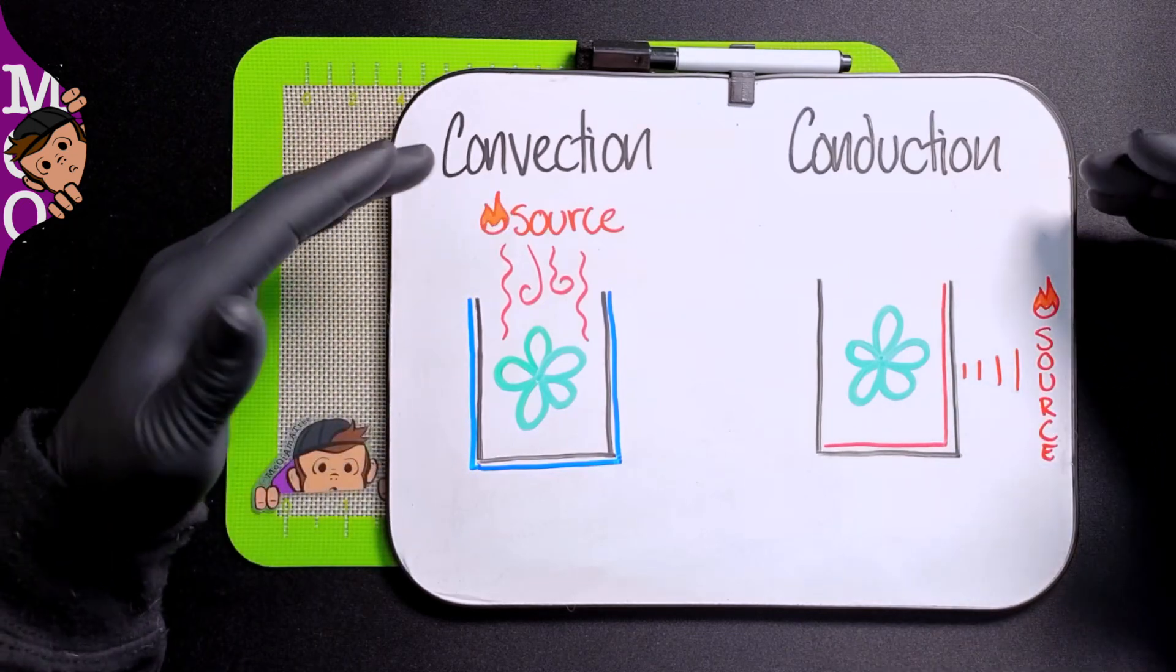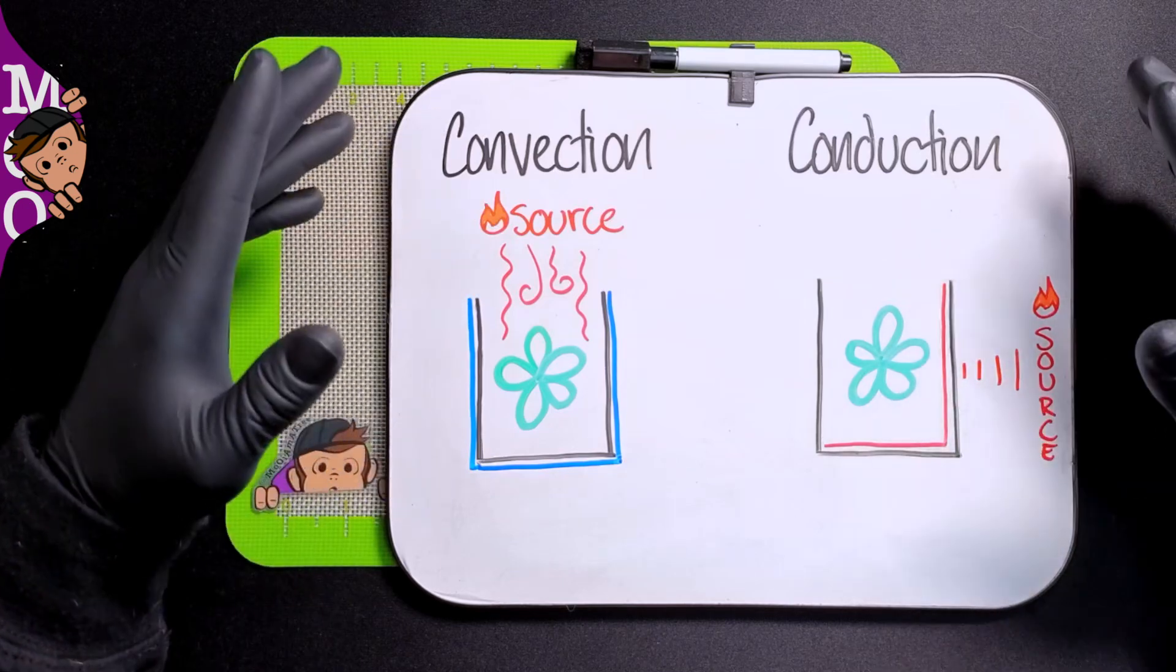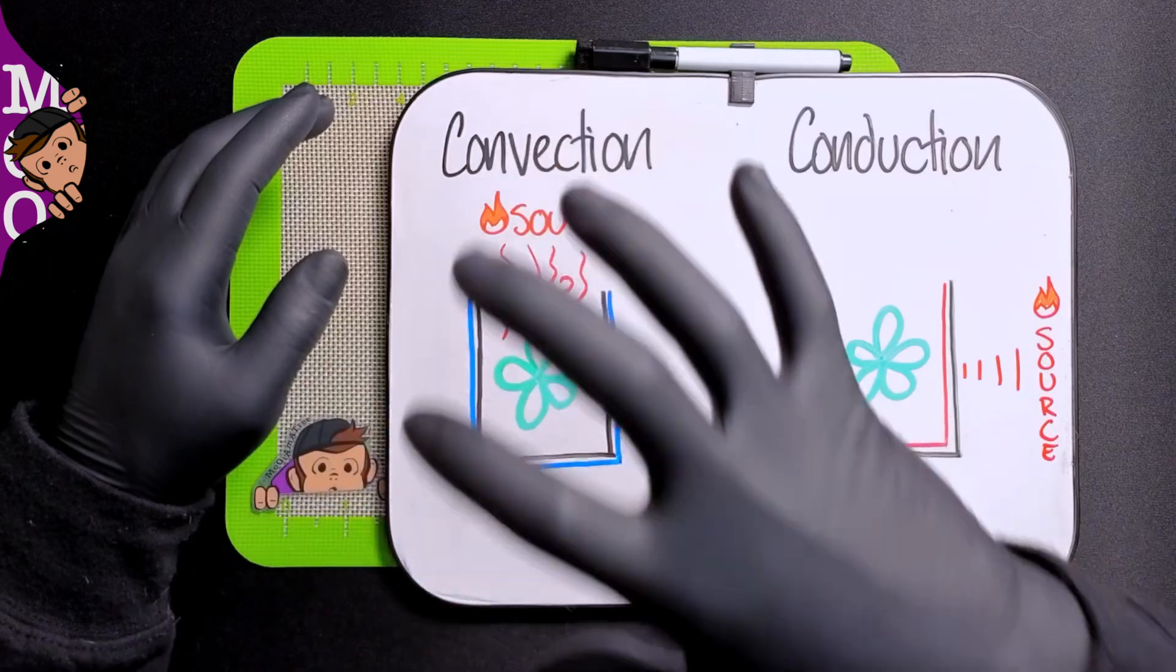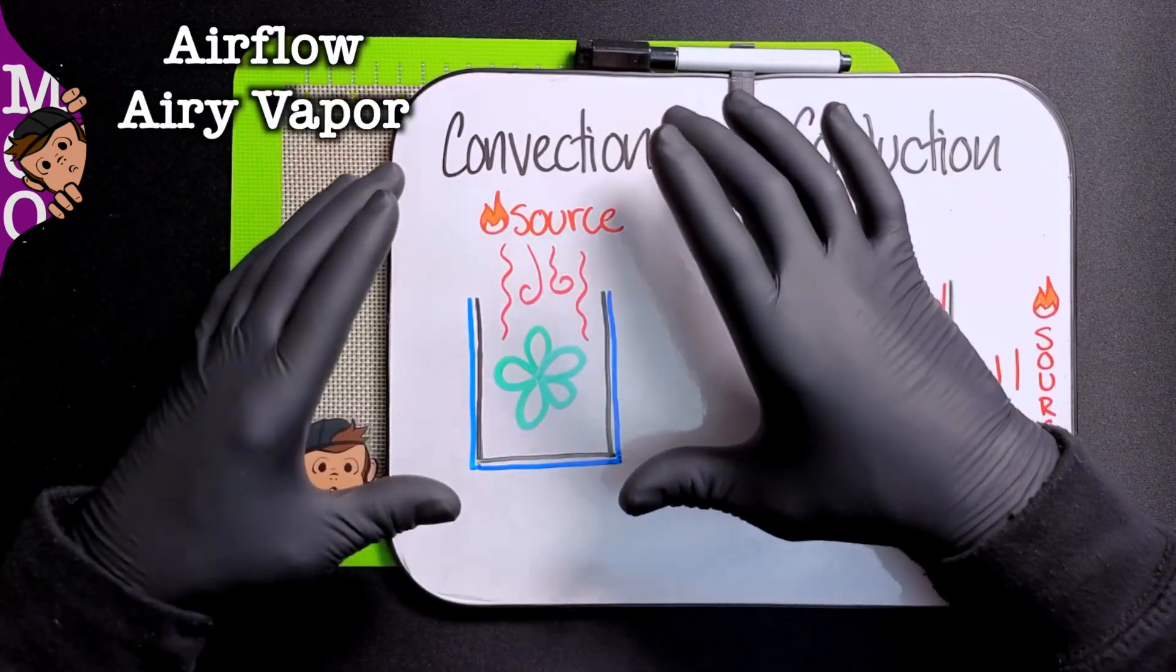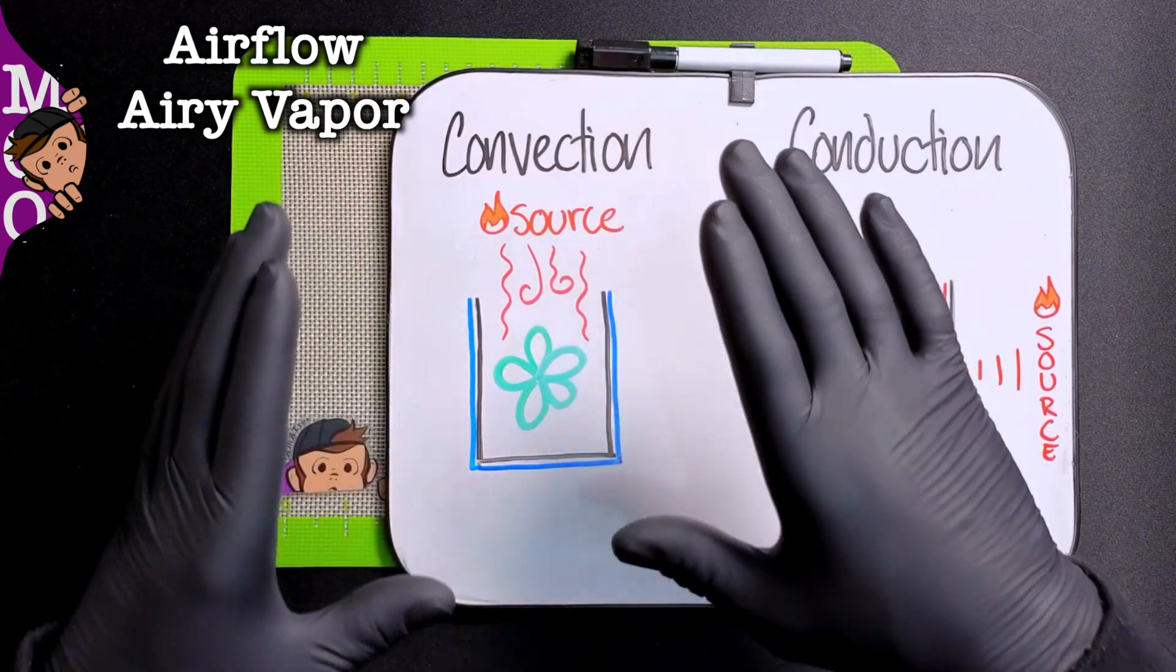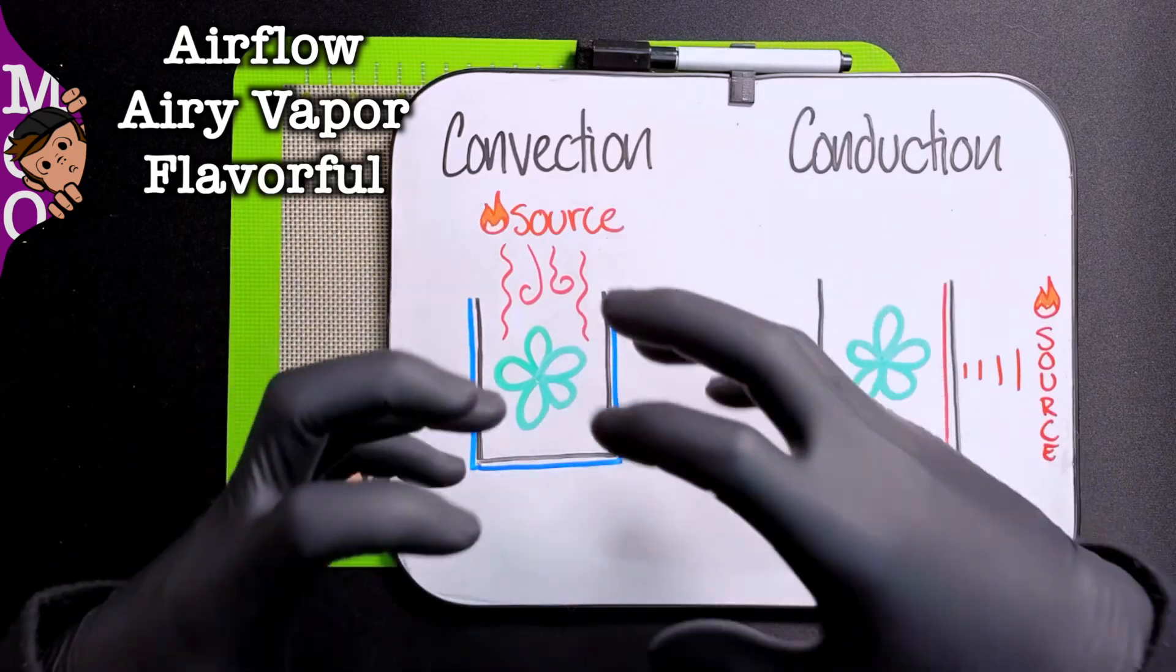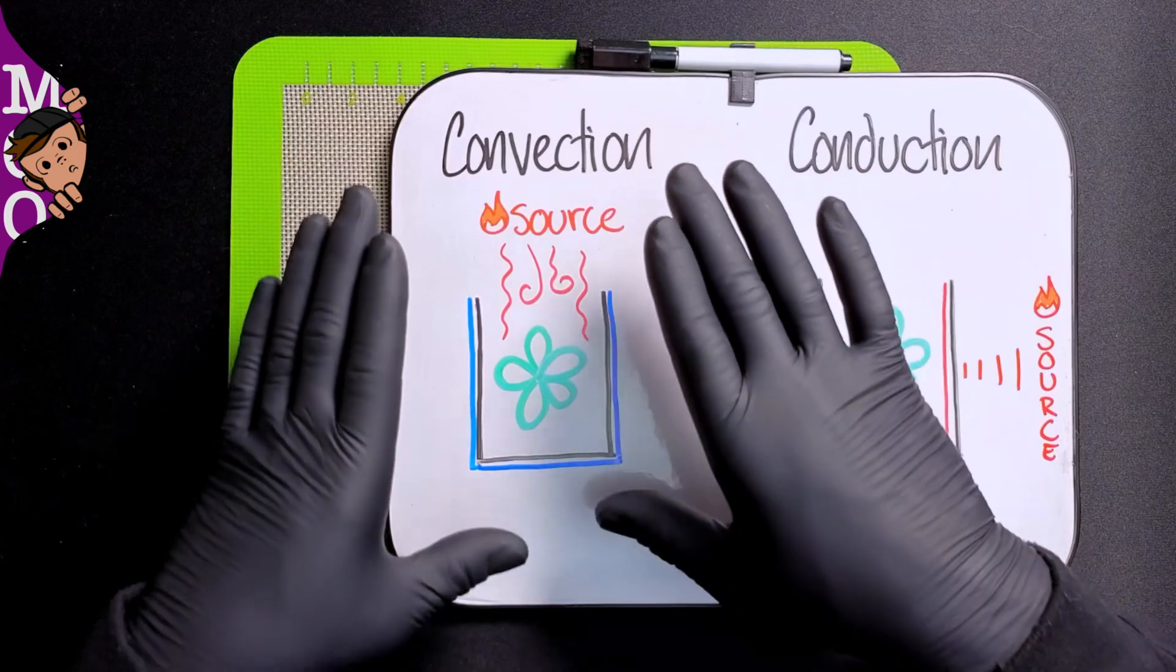Now that we've talked about how each one works, let's talk about why you would choose one over the other and who it's for. With convection, you're going to get a lot of airflow and not only a lot of airflow, but vapor that's not as dense. For people like me who have very poor lungs, or those who really like flavor or these huge tons of vapor hits, convection is going to be the way to go.